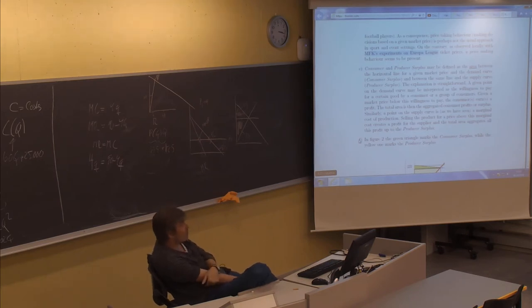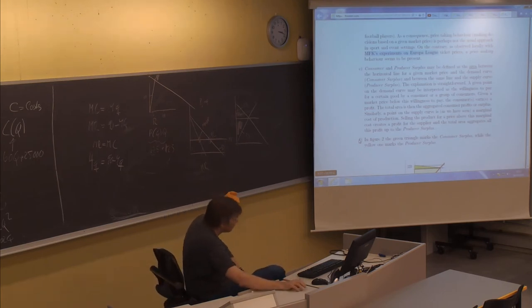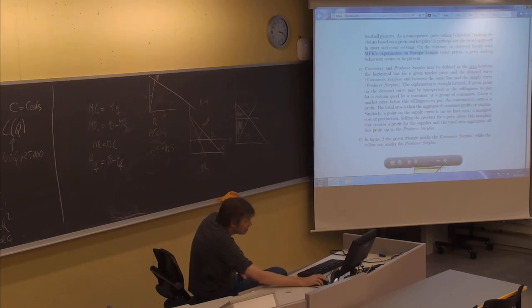So the consumer surplus is a kind of total profit ending up in the pockets of the consumers as a consequence of buying a certain product at a given price P. Similarly, the producer surplus is what fills the pocket of the supplier or producer here in the same situation. We could say the kind of division between what the consumers get and the producers get. That was question E.